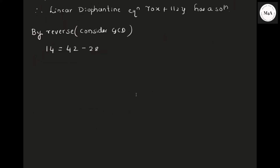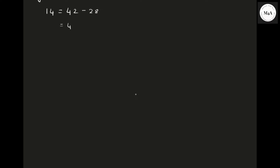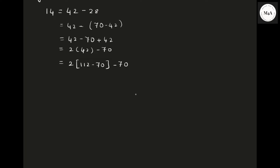14 equals 42 minus 28. Keep 42 as it is. Now, 28 can be written as 70 minus 42. Opening the bracket: 42 minus (70 minus 42) equals 2 times 42 minus 70. Again, 42 can be written as 112 minus 70. So: 2 times (112 minus 70) minus 70 equals 2 times 112 minus 3 times 70. Thus, 14 equals 2 times 112 minus 3 times 70.